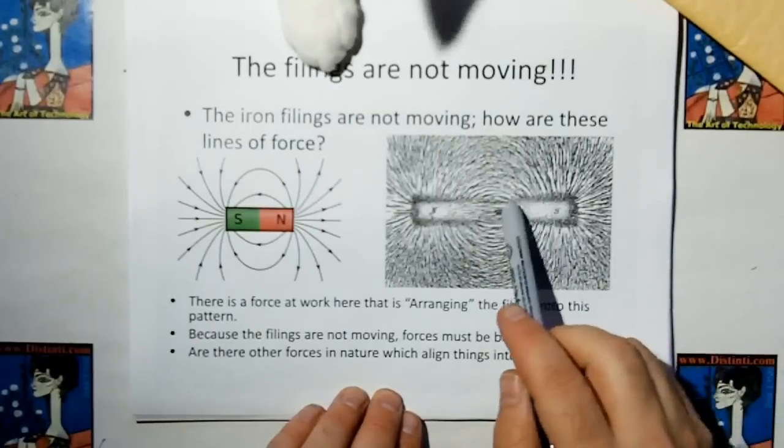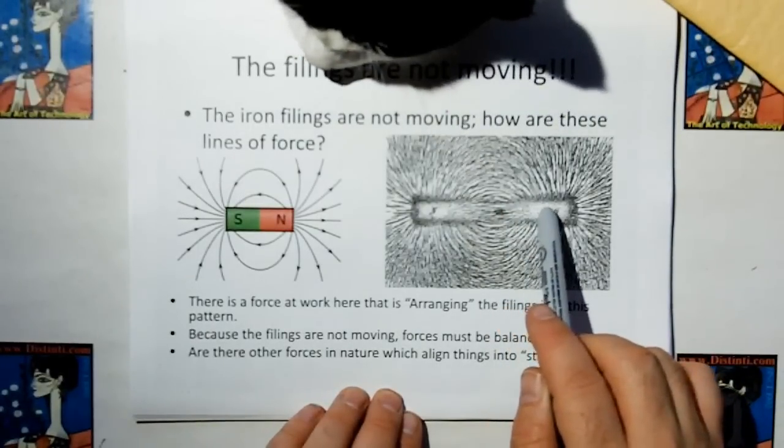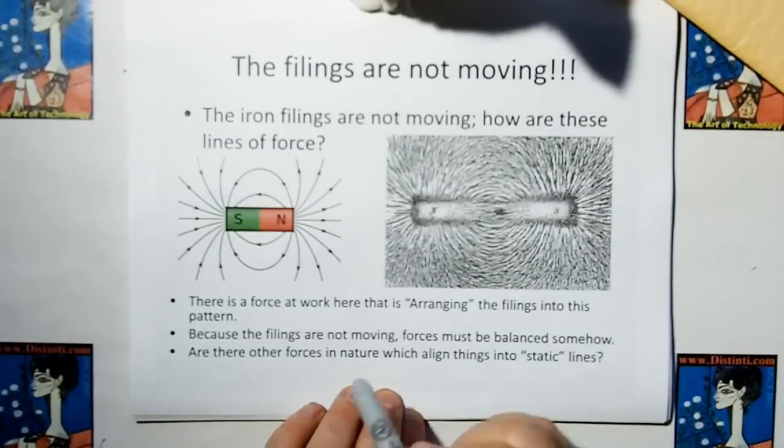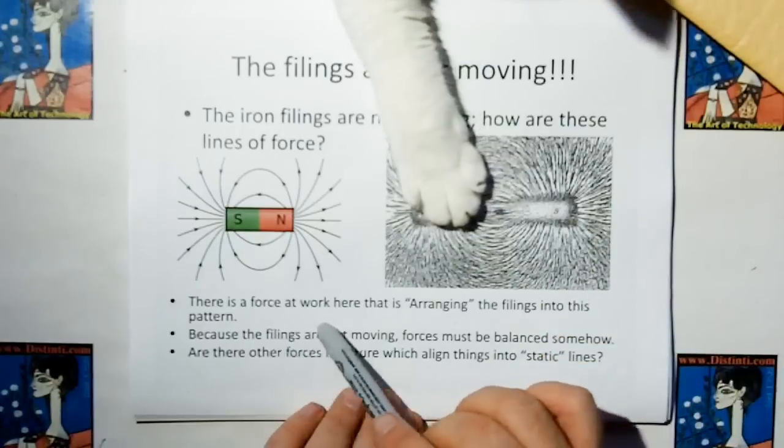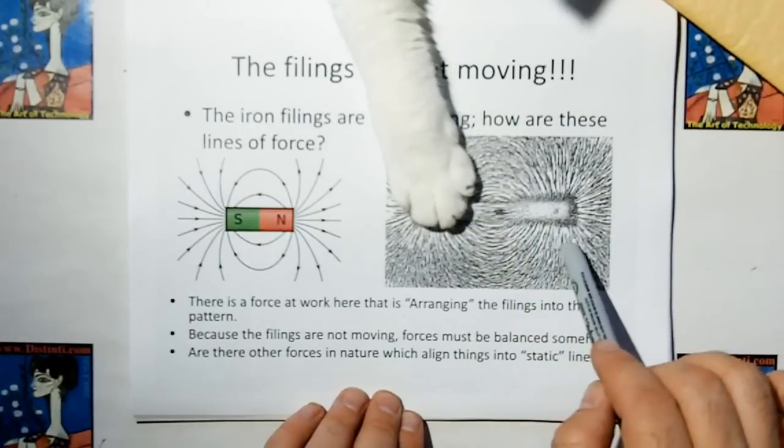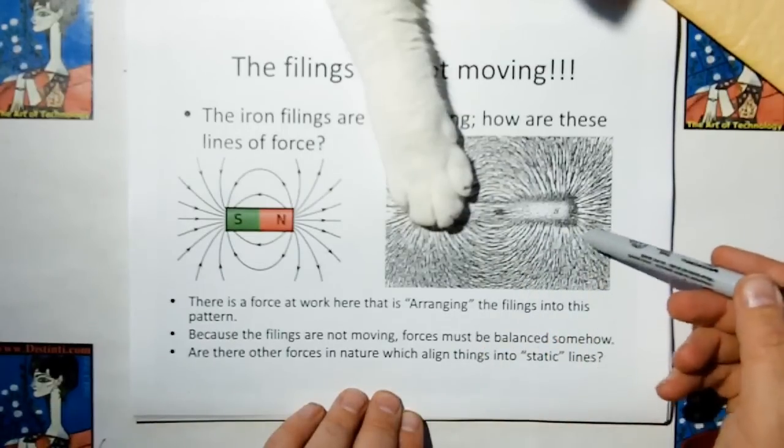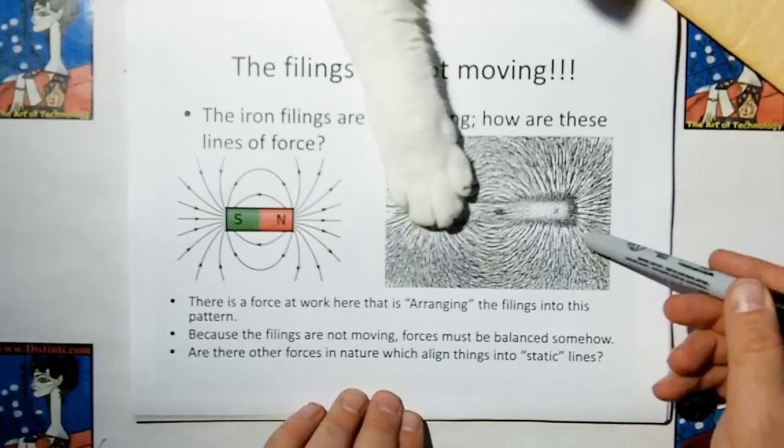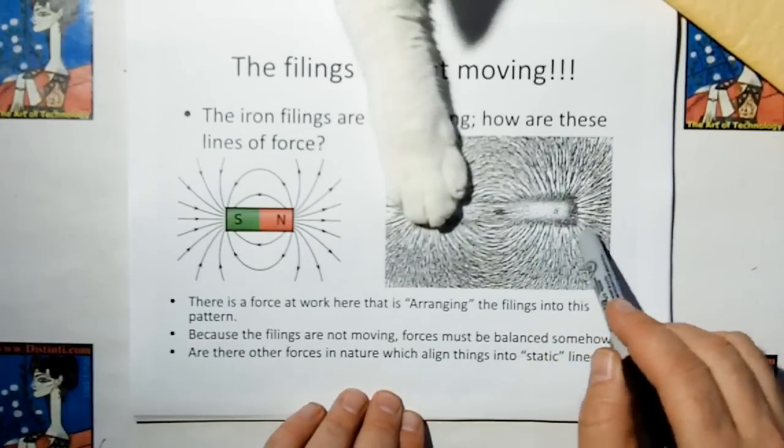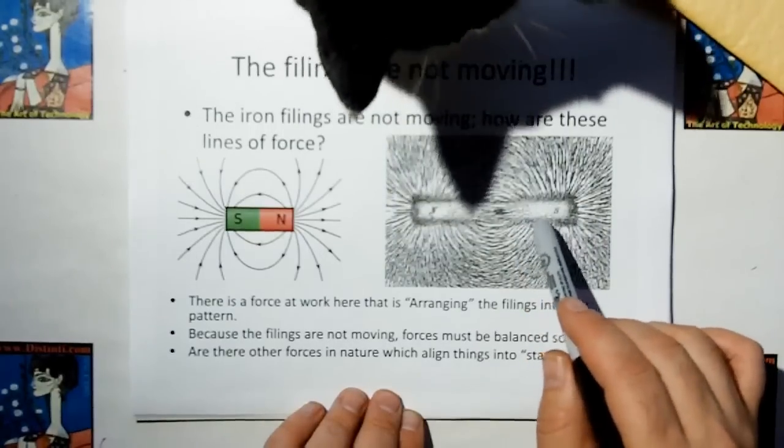But if these are lines of force, then why aren't the iron filings all flowing toward one side or the other in the field? They're static. So we can be sure that there's a force at work here, because they do arrange themselves in a nicely ordered pattern. But because the filings are not moving, this pattern can only be the result of forces that are imbalanced somehow.